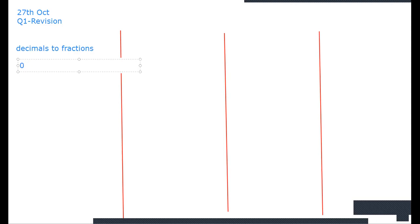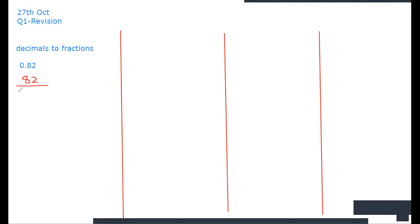If I give you 0.82, how would you convert this to a fraction? We put 82 on top and 100 on the bottom — 82 over 100. Now, you just write the number, and after the decimal point, how many numbers do you see? Two — so I put two zeros. I cannot stop here though. If this is given in the options, that's your answer, but sometimes other numbers are given, so you will simplify.